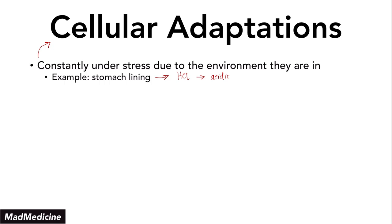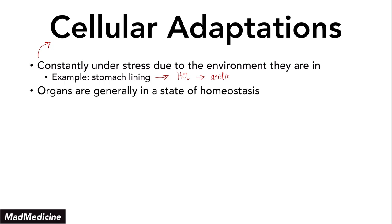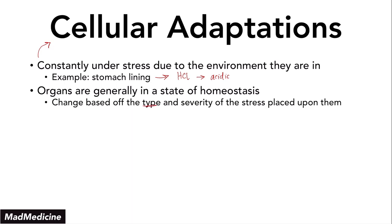That is at the molecular and cellular level. When we're talking about organs, we need to remember that organs are generally in a state of homeostasis, and they maintain that homeostasis by these cellular adaptations on a wide scale level. Organs are able to change when stress is placed upon them, and the change that happens is going to be based on the type and severity of the stress placed upon them.